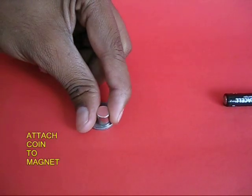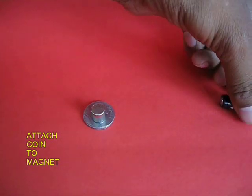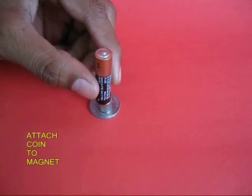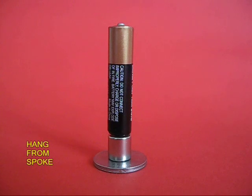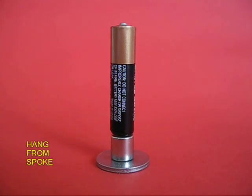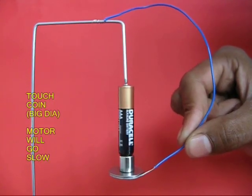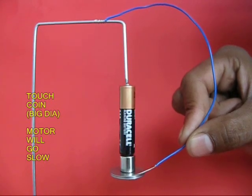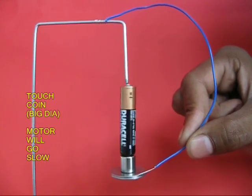You can also make a geared motor. Fix the magnet to a larger diameter coin and then the battery. Now once again hang it, and if you touch the coin which is a larger diameter, then the motor spins slowly.